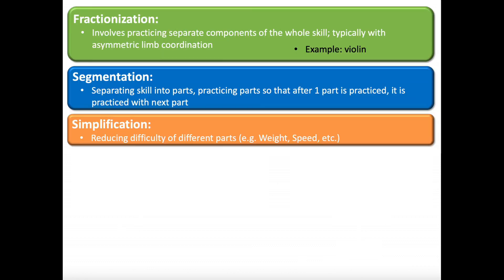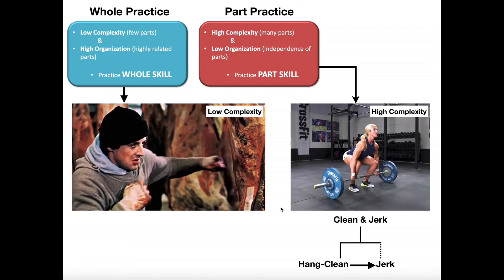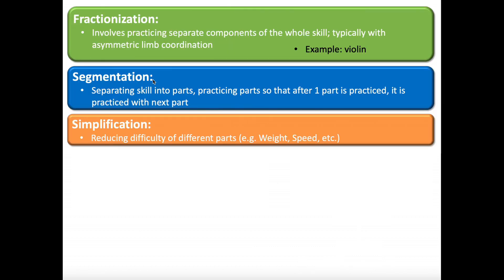Now back to part practice — there are a few other pieces to discuss: different ways to do part practice. We have fractionization, segmentation, and simplification. The type of part practice I just described is what most people think of — it's called segmentation. By definition, this is separating a skill into parts and practicing those parts, so after one part is practiced, it's practiced with the next part. For example, we segmented the clean and jerk into two separate movements — practicing the hang clean separately from the entire movement is a type of segmentation.